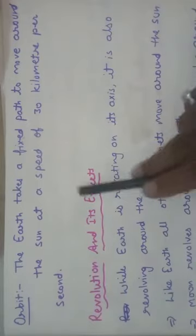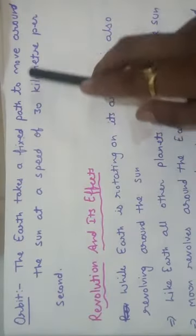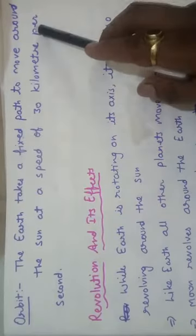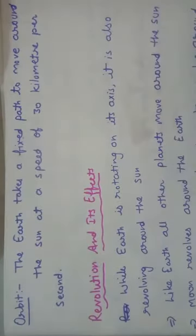What is orbit? The earth takes a fixed path to move around the sun at the speed of 30 km per second. This is called orbit.